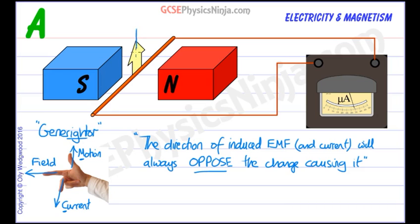So let's take a look. We've got a motion which is up, that's up. Our field is going from left to right. So that means our current must be coming out of the page. That is our induced current, and therefore the EMF is also driving that current that way.